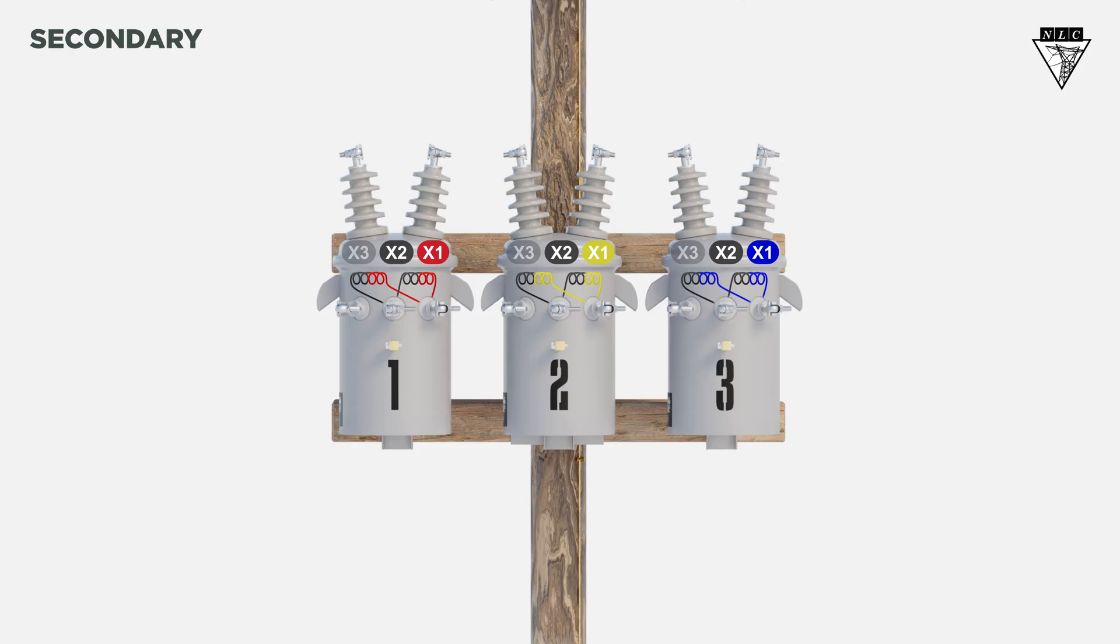To configure the Y secondaries, first, bond all transformer cases together and tie them to ground. Connect the X2 bushings together and make the X2 bushing of the center transformer the neutral.